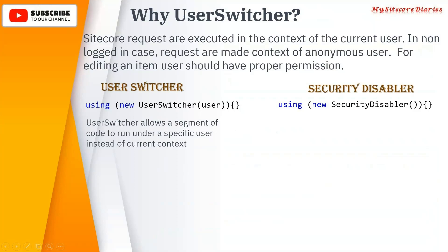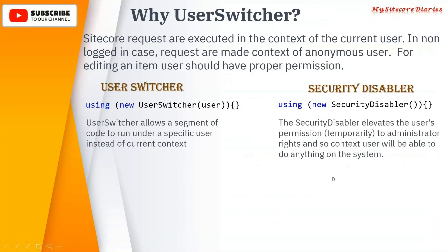For example, if I am ABC and you are passing PQR, then that code will get executed under PQR, not by ABC. The security disabler elevates the user's permissions temporarily — the permissions are disabled and the user is given administrator rights. So if I am an ABC user with XYZ role, those are temporarily disabled and I become the administrator for that scope. This is why it is very important to use 'using' here.